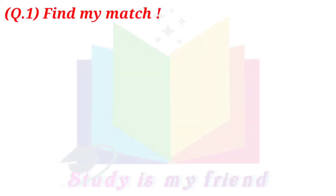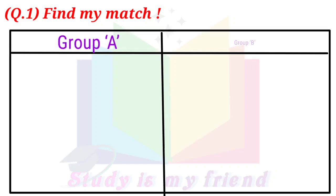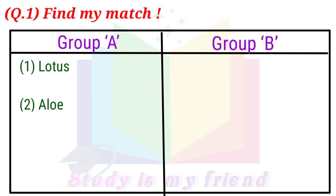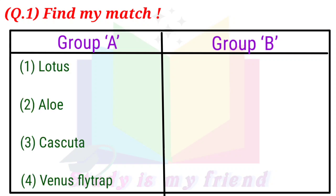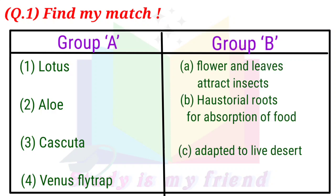Question 1: Find My Match. Group A: 1. Lotus, 2. Aloe, 3. Cuscuta, 4. Venus Flytrap. Group B: A. Flower and leaves attract insects.